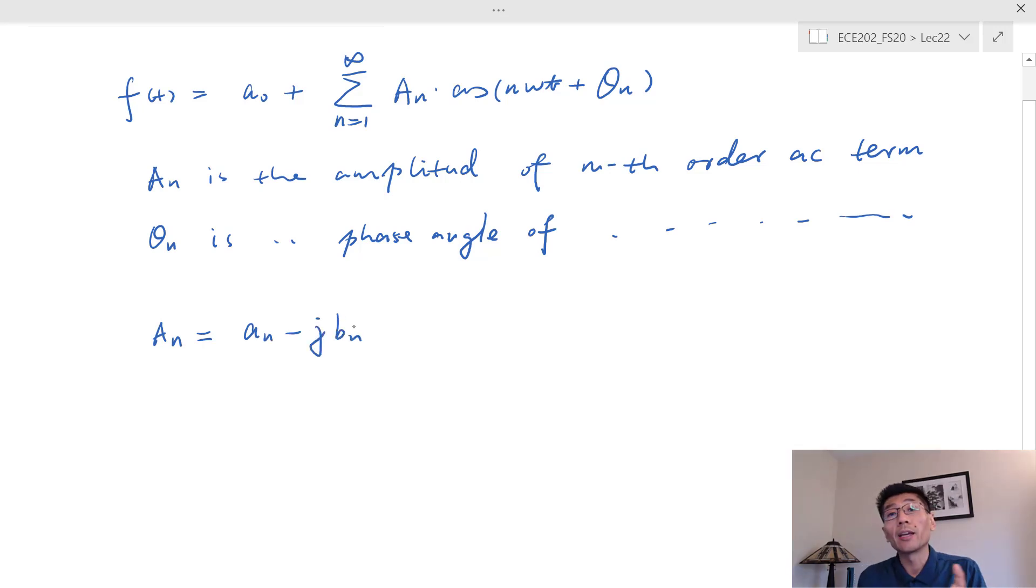The A_n is just the magnitude of that phasor for A_n minus j*B_n. Because the cosine(n*omega*t) will correspond to the phasor of the magnitude, and the sine function will correspond to the phasor of minus j.